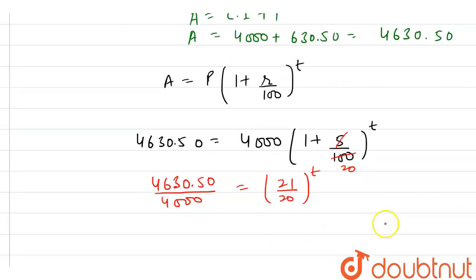If we multiply numerator and denominator by 2, we get 9261 over 8000. This equals (21 by 20) cubed, and on the RHS we have (21 by 20) raised to power T.